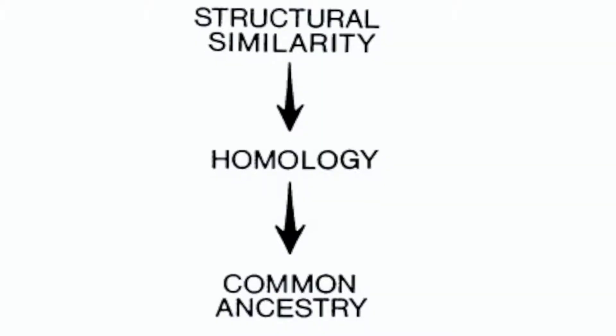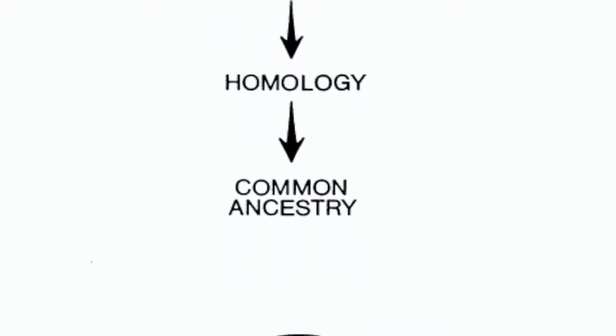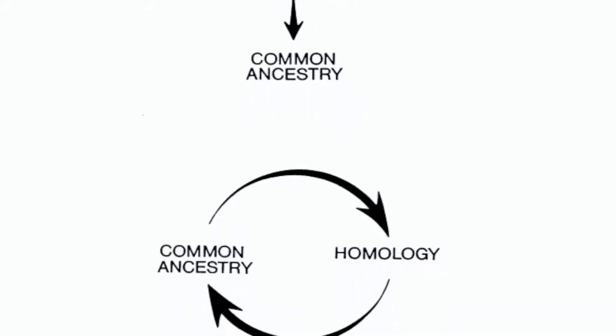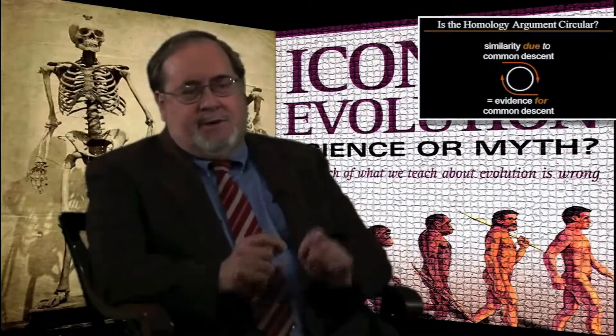The problem with that move is that if you define homology in terms of common ancestry, you cannot then turn around and say that it's evidence for common ancestry, because that's circular reasoning. In effect, you're saying homology is due to common ancestry, which is due to common ancestry. So logically speaking, once you define homology in terms of common ancestry, you cannot use it as evidence for common ancestry.